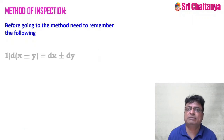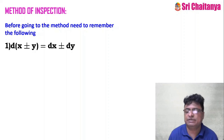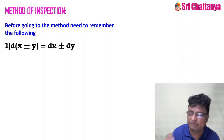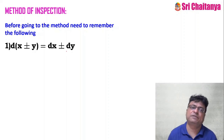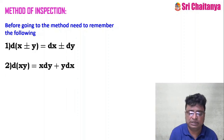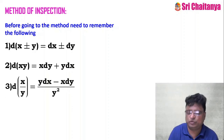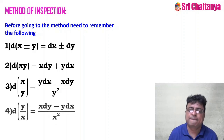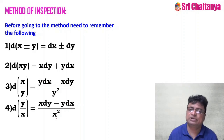Before going to this method, you need to focus on these key formulas. d(x ± y) = dx ± dy. d(xy) = x dy + y dx. d(x/y) = (y dx − x dy) / y². d(y/x) = (x dy − y dx) / x². These are all very familiar, well-known formulas for you.